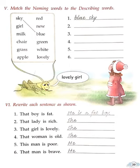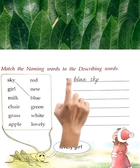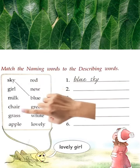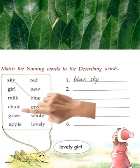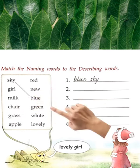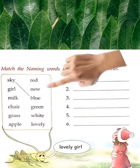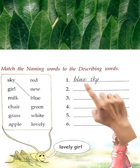Okay, next go to the next page — page number 39. Dekhiye Question number 5: 'Match the naming words to the describing words.' Toh yahan pe naming words — left hand side mein jo dekh pa rahe hain woh naming words yani nouns hain — kisi vastu ya cheez ka naam. Aur right hand side mein describing words yani adjectives hain jo quality batate hain. Aapko dono ko sahi sahi jodna hai.